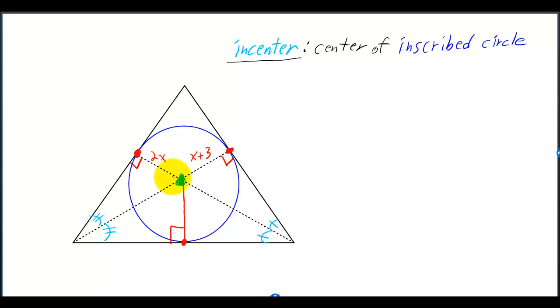2X distance is coming from the center to the point of tangency, therefore it is a radius. And since the X plus 3 is also a radius, we know that the 2X is going to have to equal the X plus 3. Subtracting X gives you X is equal to 3.